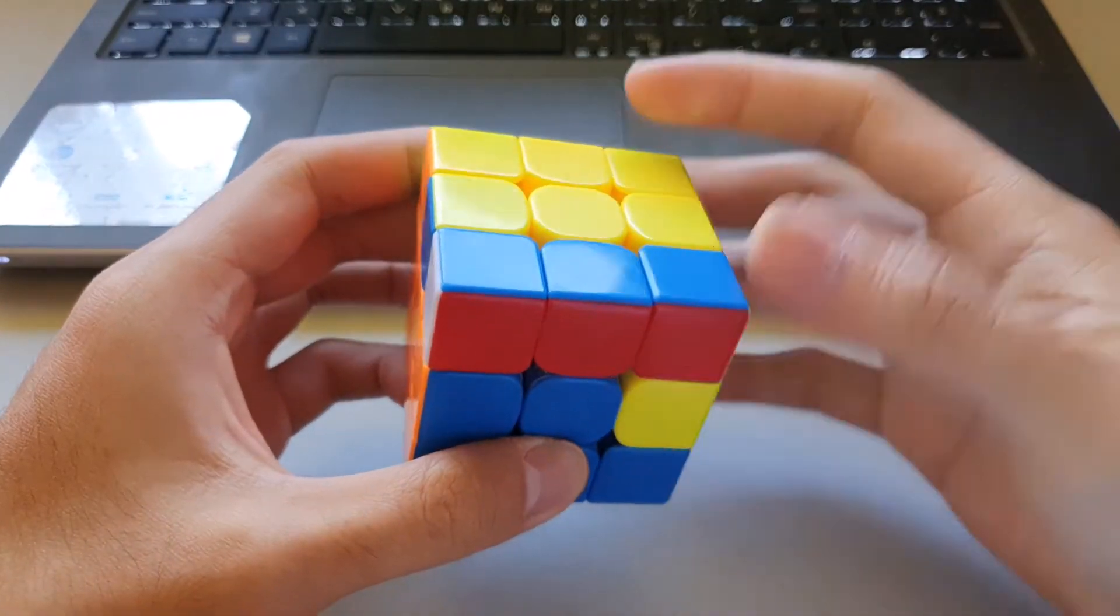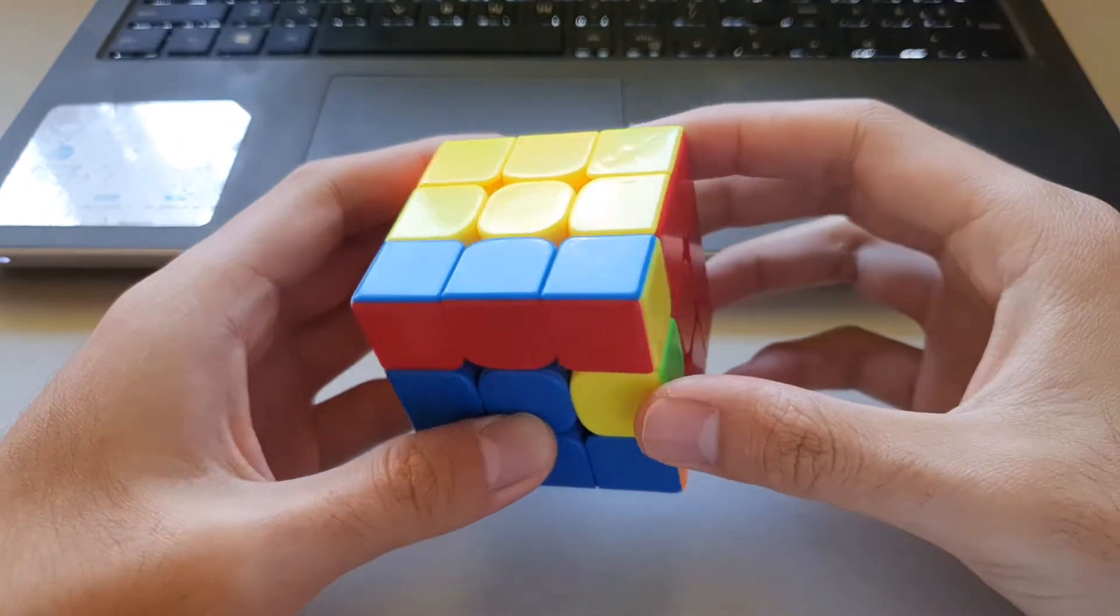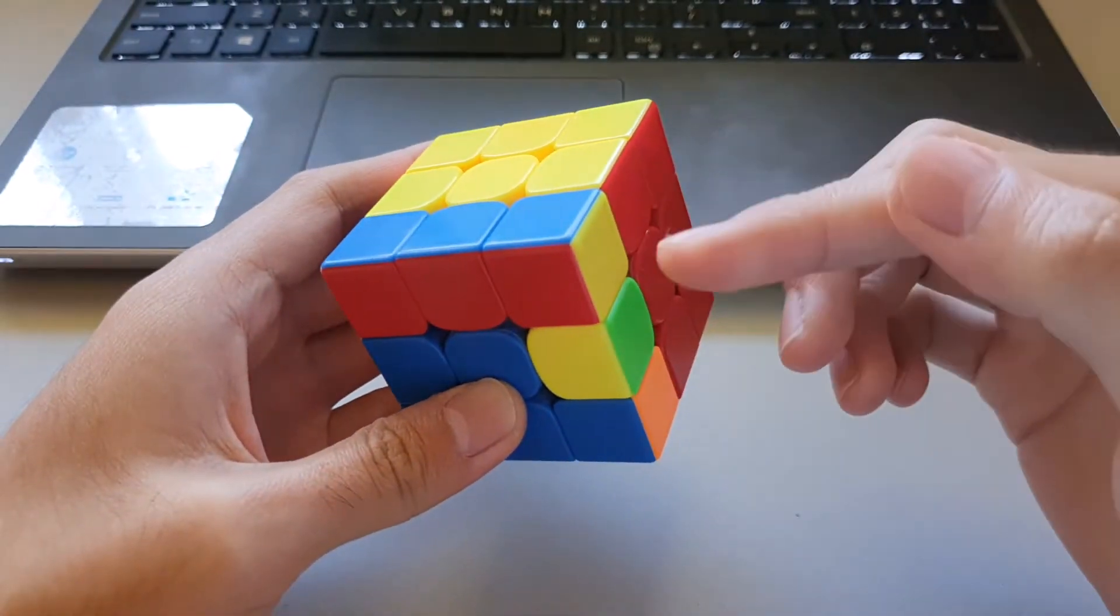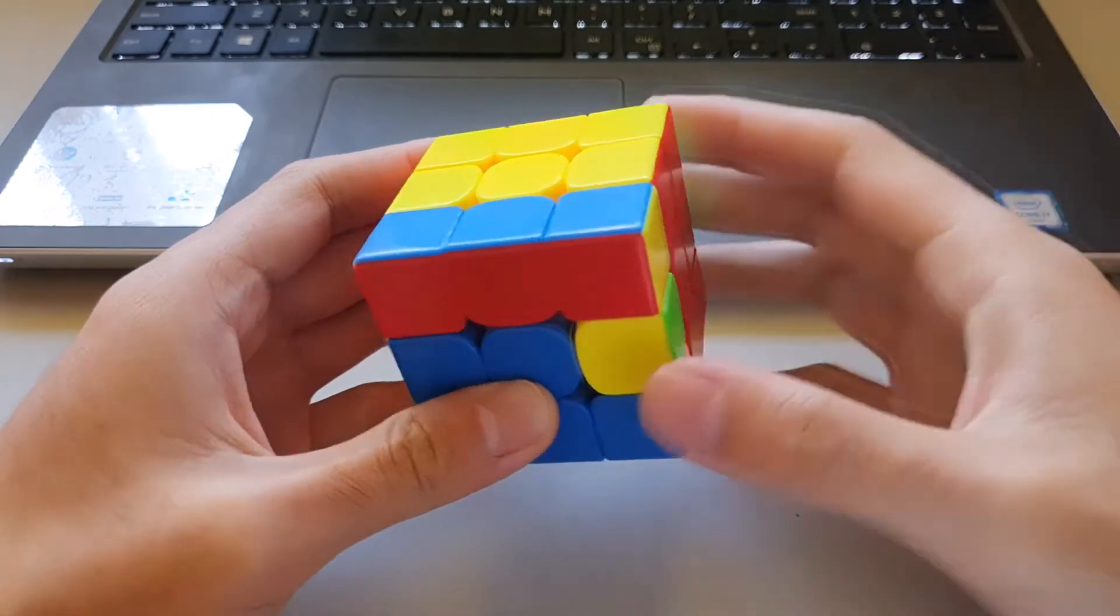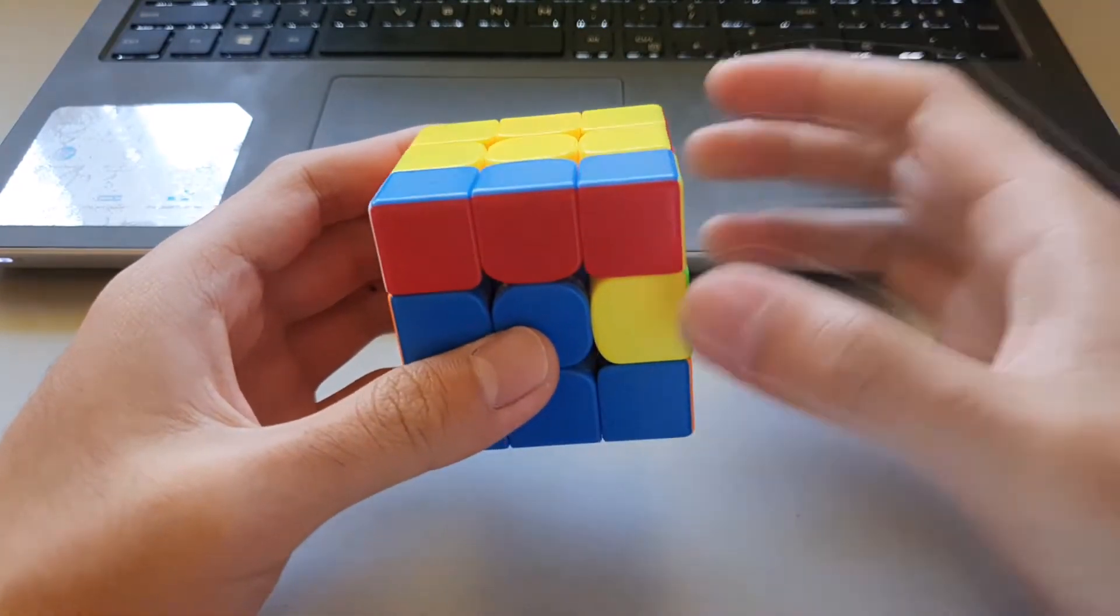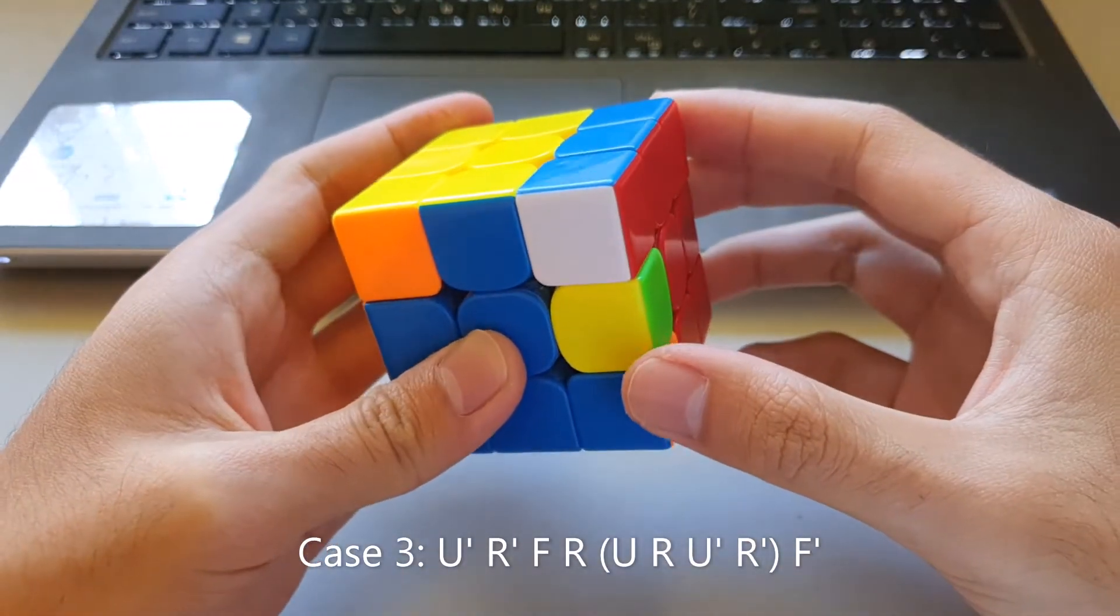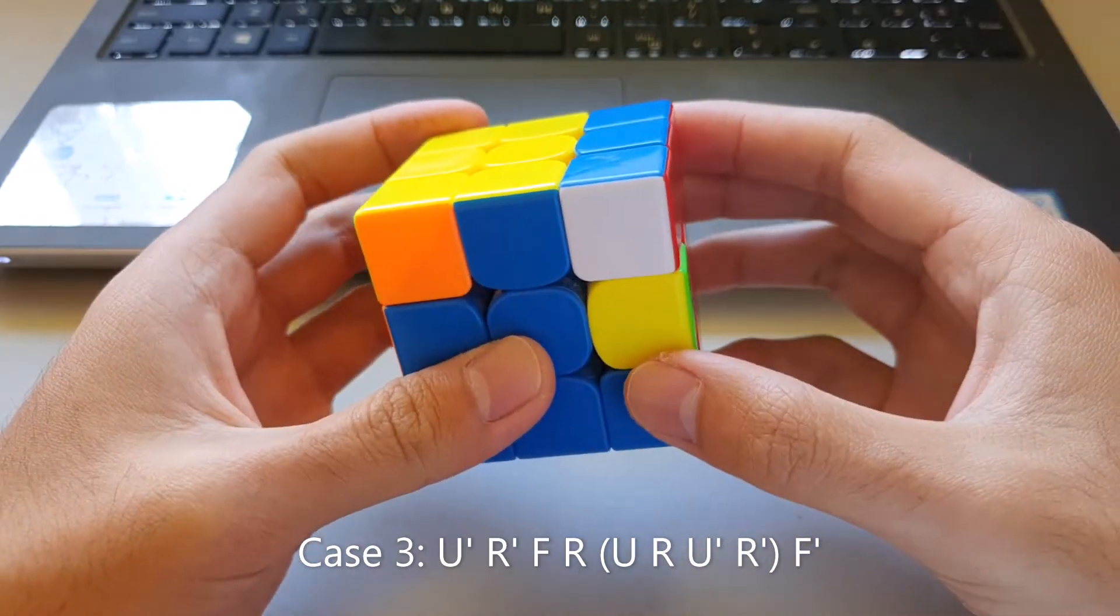So for this case it's also got the rectangle at the back but unlike the regular OLLL skip case, this one has the yellow sticker here facing towards the right. So for this case what you want to do is move the F2L pair over into this position and insert it in a slightly different way. So it starts off kind of like a sledgehammer.